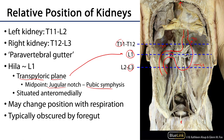Even though the kidneys are within the retroperitoneum, they can move around. Their position is mobilizable through either the process of respiration — as the diaphragm depresses — or by the action of gravity upon the kidneys, as we'll discuss.